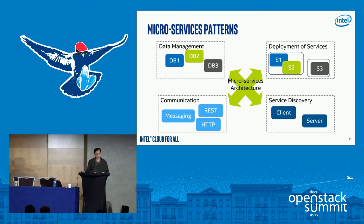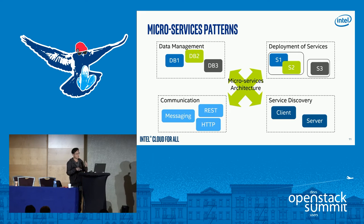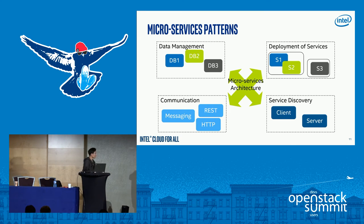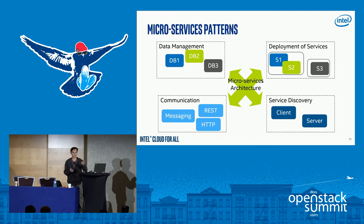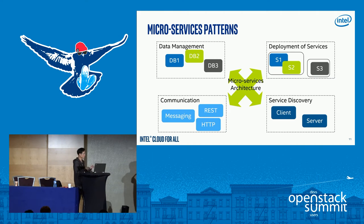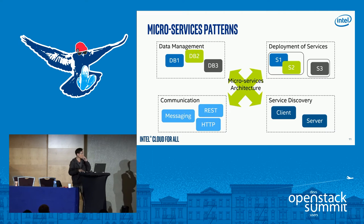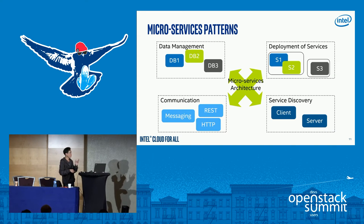In terms of deployment, every microservice can be deployed in a single VM. You can also deploy multiple services on a single VM, but my recommendation is one service per VM — that makes it easier to deploy and scale. In the microservices world, you'll also need service discovery, because service A, service B, and service C all need to talk to each other. You can use client-based or server-based service discovery. The Netflix open source projects provide a lot of tooling to help you design microservices, including service discovery. For communication between services, we generally use messaging or message queues, or HTTP and REST APIs.